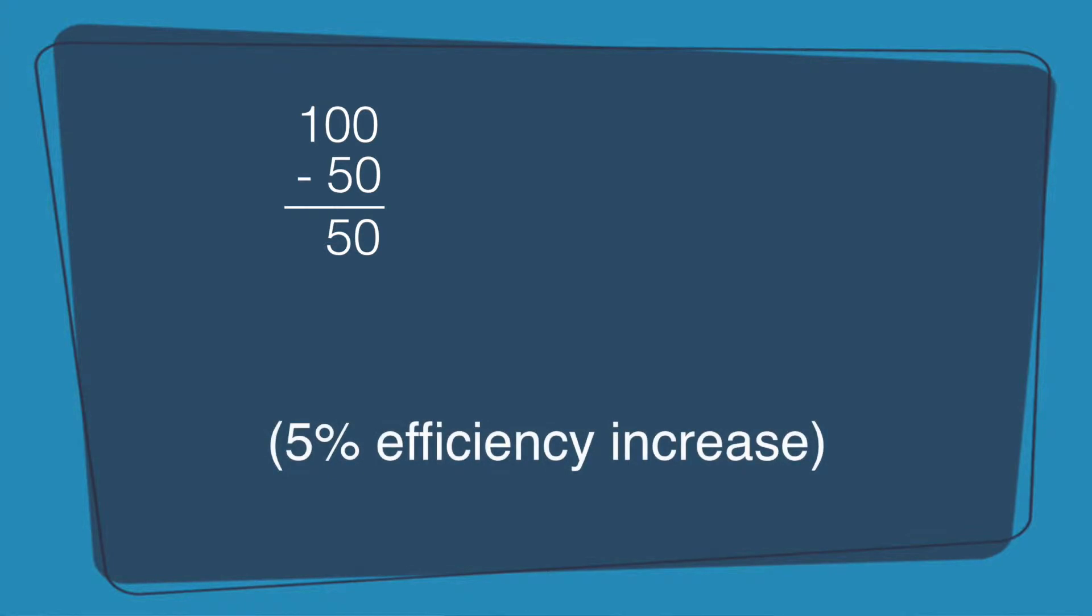What does that do? Let's say this is your 100. This is a 50% cost of goods sold. You're now at a 45% cost of goods sold,